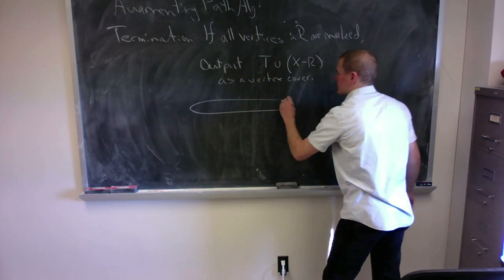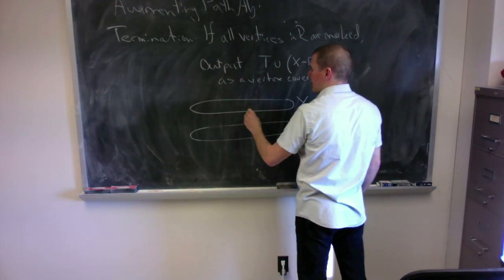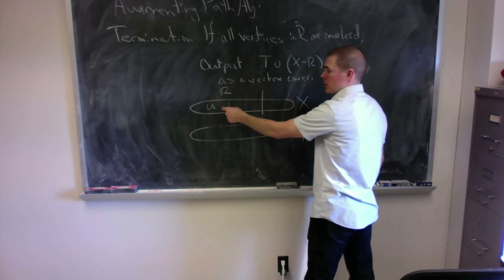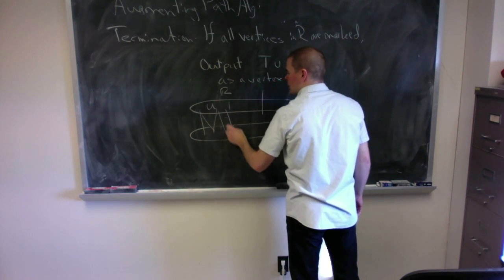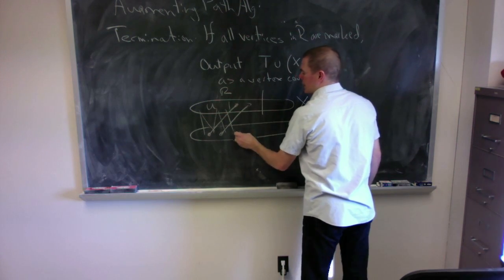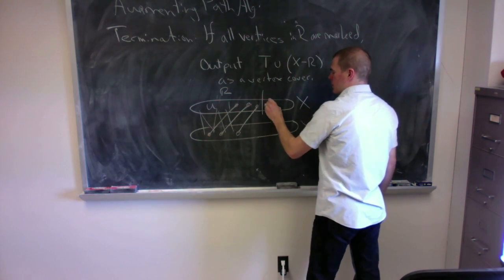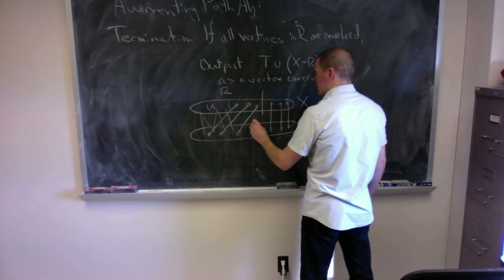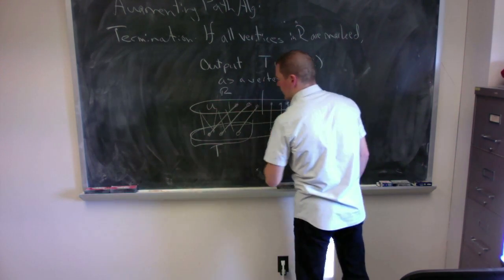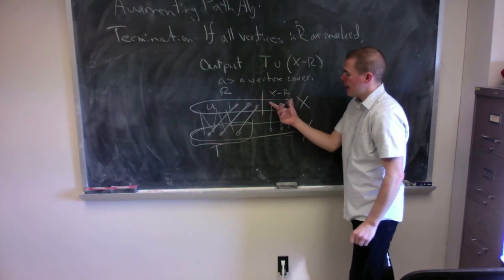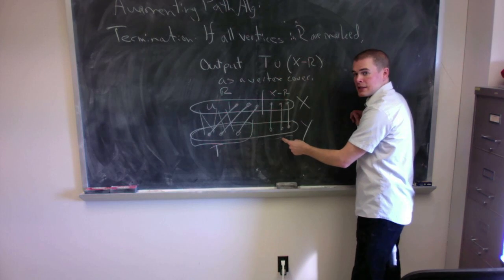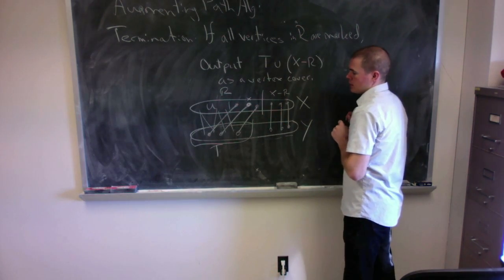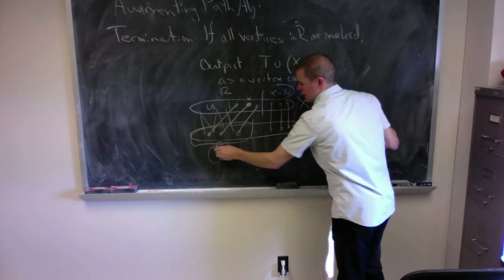The reason it is a vertex cover: looking at X and Y, all unmatched vertices are inside R because I started that way, and they went to all their neighbors in T, all of which were matched back into R. None of those unmatched neighbors got placed into T. So T is over here and X minus R is over there, and there are no edges spanning from R to Y minus T — because when I visited any vertex x in my iteration, I couldn't have traveled to a vertex in Y minus T. So X minus R union T is a vertex cover.